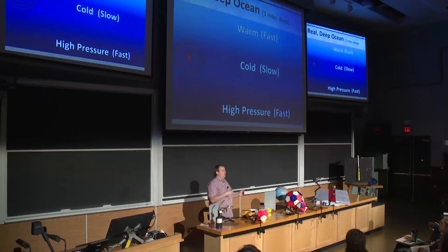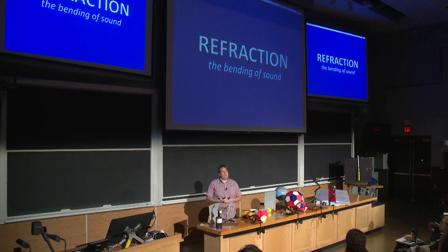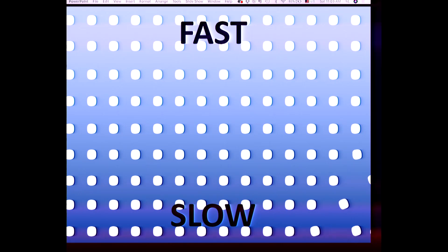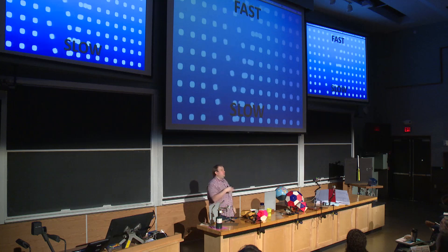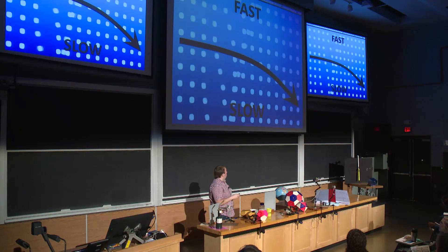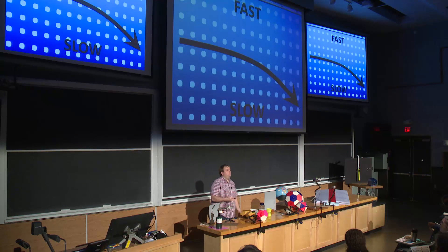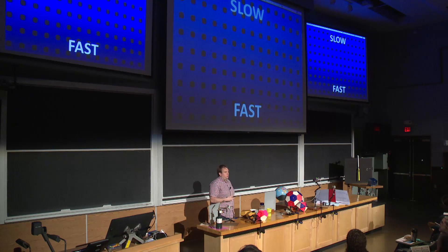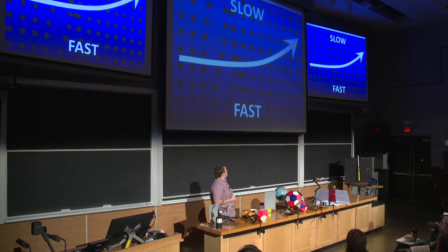Any time you have sound traveling at different speeds, there's a phenomenon called refraction — the bending of sound. Imagine we have a gradient going from fast to slow: molecules along the bottom are traveling very slowly whereas across the top they're moving quite quickly, and the net effect is that the sound starts to bend downwards — towards the slower medium. If we flip it — slow at the top, fast at the bottom — we see the opposite: it starts bending upwards, again towards the slower medium. So what we learned is sound bends towards the slower medium.